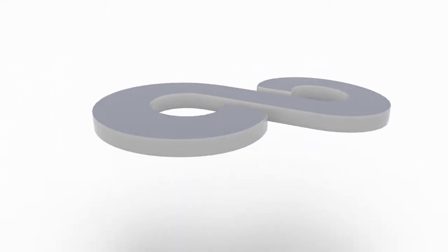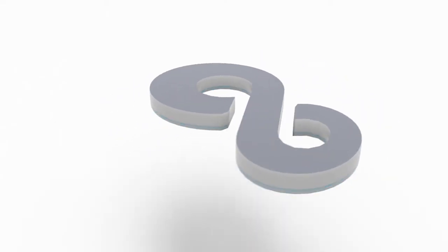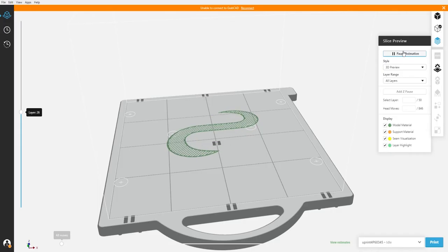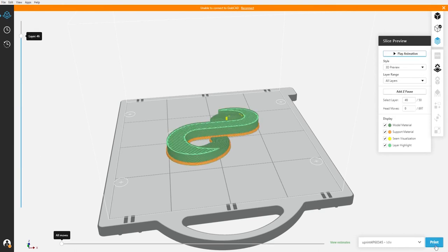This program is called a slicer because its main function is to slice up the design into layers that will be printed one on top of another. Each layer is like a cross section of your design. Once you have your product sliced and prepared, you're ready to start printing.